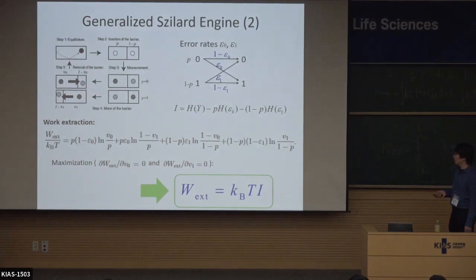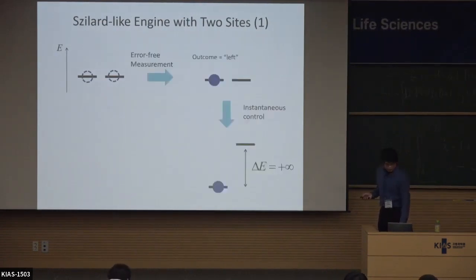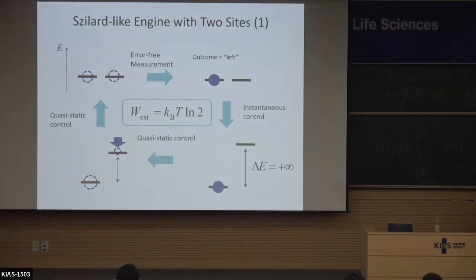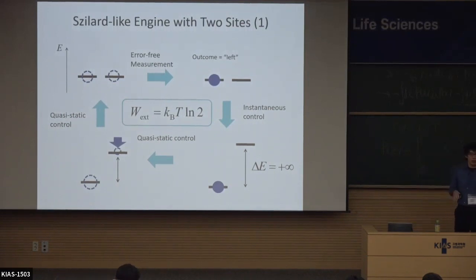We can introduce another simpler model for this feedback process. The thread engine involves particles in a box and pressure, but it is a little tricky from the theoretical point of view. So we can consider a more simplified model that consists of just two sites, and this kind of model can be described by a Markov jump process.